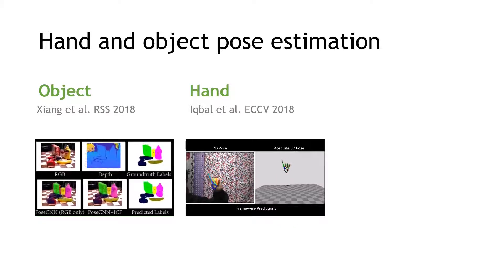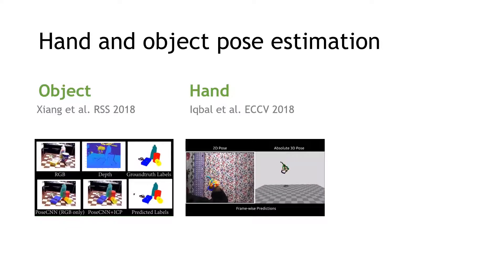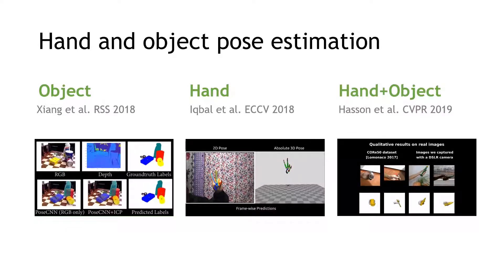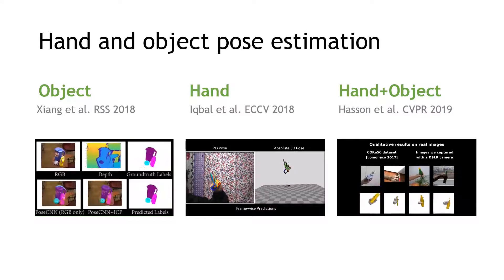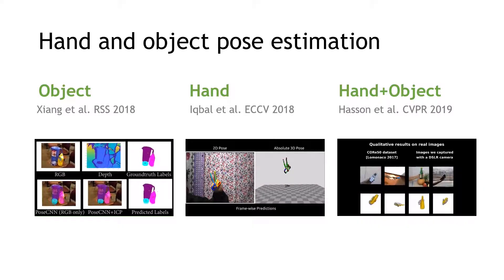However, state-of-the-art methods for hand pose estimation and object pose estimation focus on the hand or the objects independently. In the computer vision community, there are some recent studies on jointly estimating hand and object pose while the hand is interacting with the object.